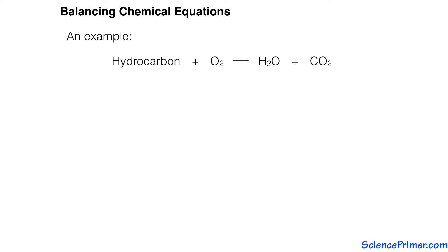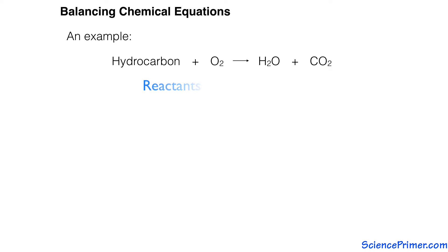The chemical equation for the combustion of hydrocarbons, such as ethanol or propane, follows the general structure of: hydrocarbon plus oxygen converts to water and carbon dioxide. The hydrocarbon and oxygen are reactants; water and carbon dioxide are products.